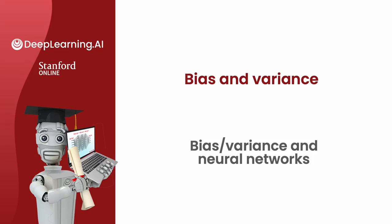We've seen that high bias or high variance are both bad in the sense that they hurt the performance of your algorithm. One of the reasons that neural networks have been so successful is because neural networks, together with the idea of big data or hopefully having large datasets, has given us new ways to address both high bias and high variance.